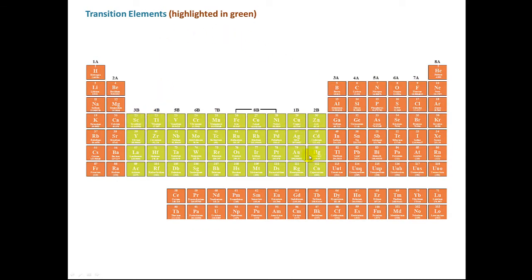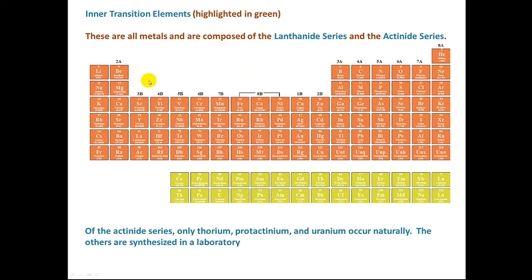The elements highlighted in green in this section here are called the transition elements. Transition elements are all solids with the exception of mercury. Mercury is a liquid at normal temperatures and pressures. These two rows at the bottom are called the inner transition elements. These are all metals, and the first row is called the lanthanide series, and the second row is called the actinide series.